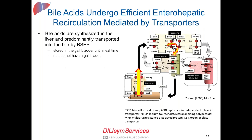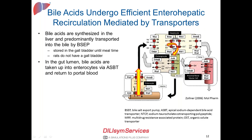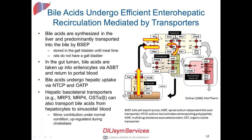Once within the gut lumen, bile acids are taken up into enterocytes via the ASBT transporter. From the enterocytes, they are transported back to the portal blood by OSTα/β or MRP3 transporters. This reuptake is very efficient. From portal blood, bile acids undergo hepatic uptake mostly via NTCP transporters and somewhat through OATP transporters. Bile acids can also be transported back to sinusoidal blood via MRP3, MRP4, and OSTα/β, which have minor contribution under normal physiological conditions.